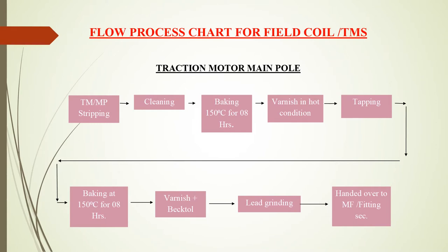After being stripped from the magnet frame, both main pole and inter pole are brought to the field coil section for overhauling. For the main pole: initially, main pole stripping takes place where old tape is removed and mica and glass tapes are removed using a knife. Then the cleaning process takes place where carbon particles are cleaned using Orion 77. Thereafter, baking at 150 degrees Celsius for 8 hours is done, followed by applying varnish H71 in hot condition.